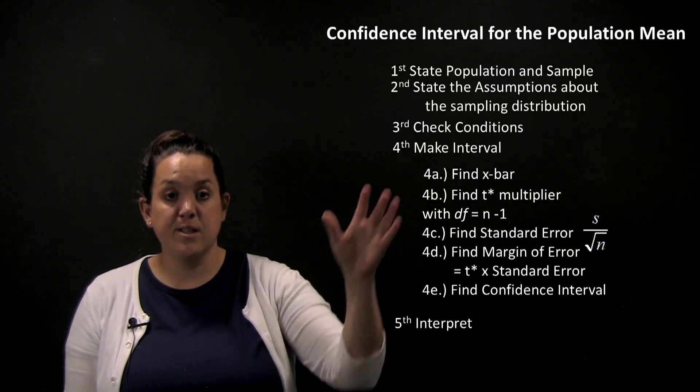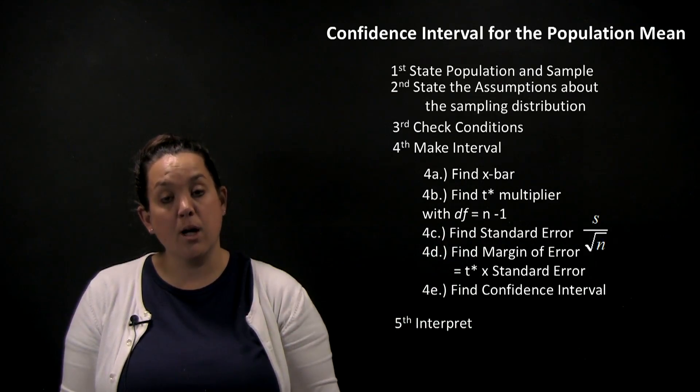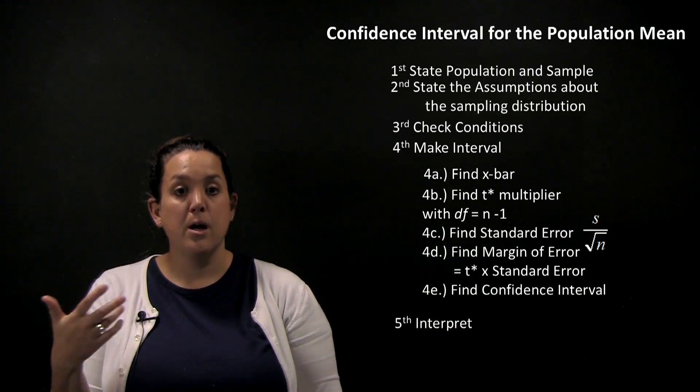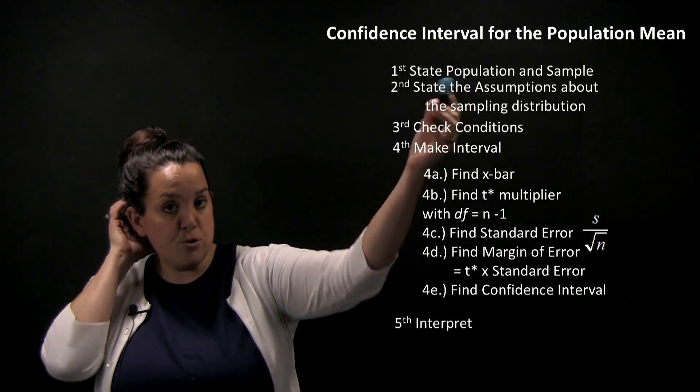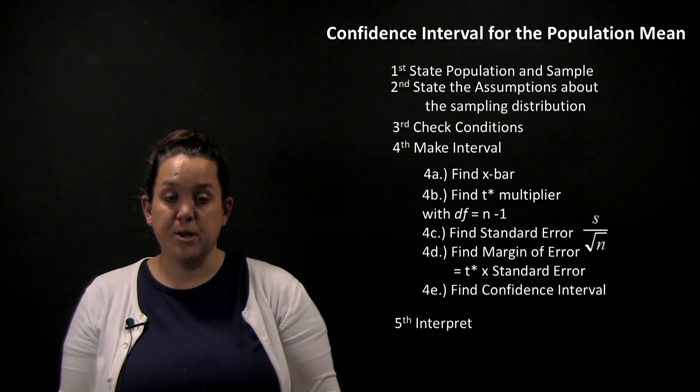With this confidence interval, you'll notice that the steps are actually similar to what we've seen in chapters past. The very first thing that we need to do is state the population and the sample.